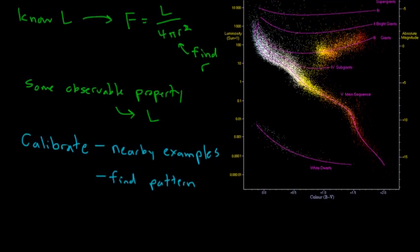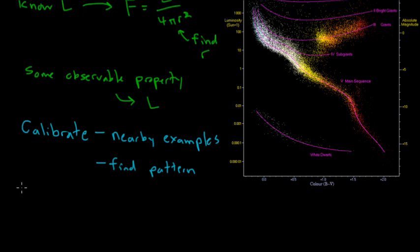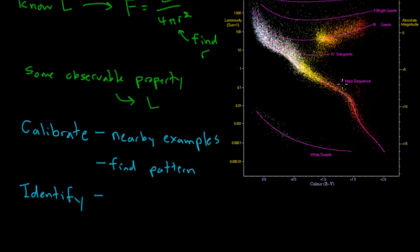The next thing that we have to be able to do when considering standard candles is we have to be able to properly identify that the object we're looking at actually belongs to this set of standard candles. So we have to be able to identify the different objects. For example, let's say I measure a certain star and I notice that it's red. Well, in that case, if the only piece of information I have is that the star is red, I'm going to have a very difficult time determining whether that star belongs in the main sequence population down here or the red giant population up here. And we notice that these objects have very different brightness. So we need to be able to identify which population that belongs to — we need to make sure we have the correct candle that we're actually looking at.